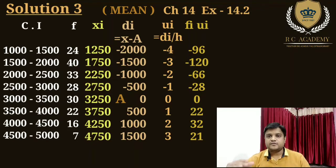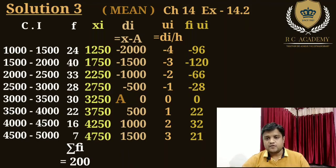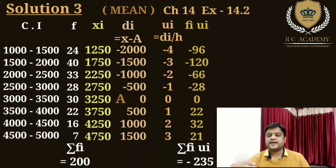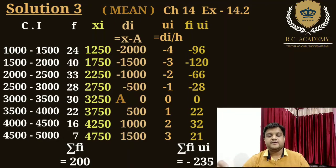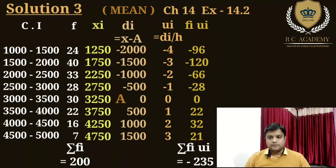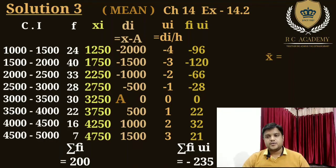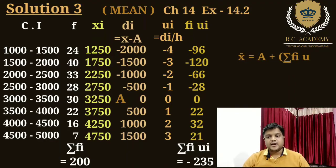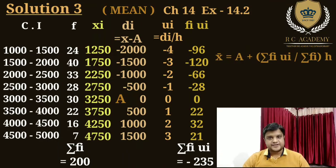Ab dekho, summation of fi kitna hoga? 200. Summation of fi·ui, minus aur plus karke, minus 235. Ab hum formula apply karenge. Formula of mean in step deviation method is: x̄ = a + (Σfi·ui / Σfi) × h.